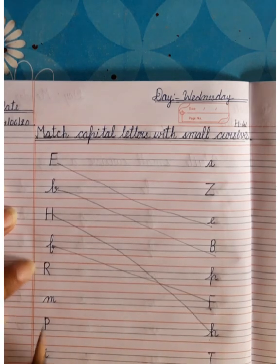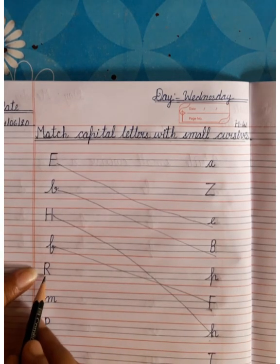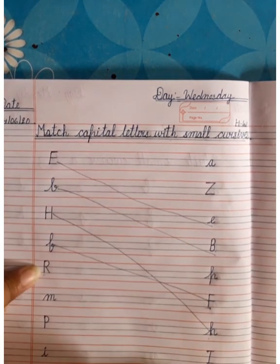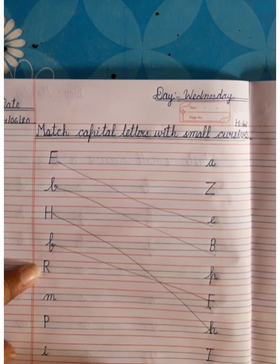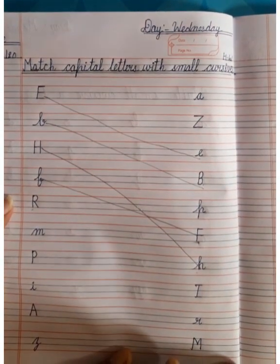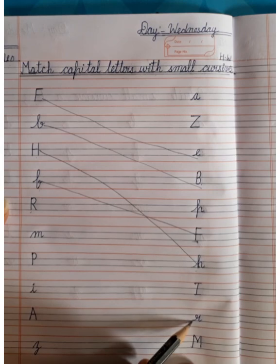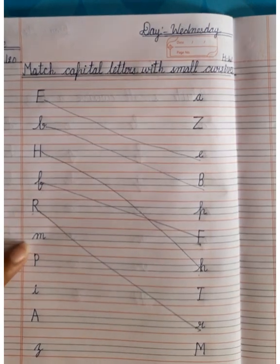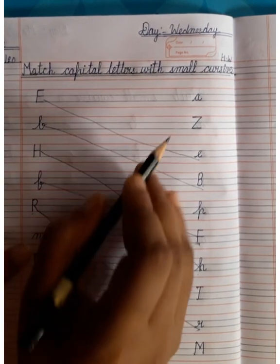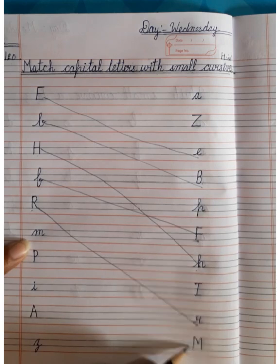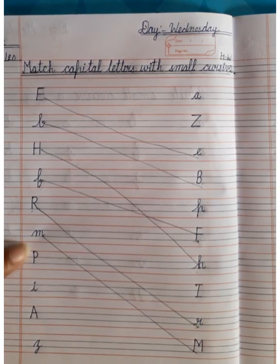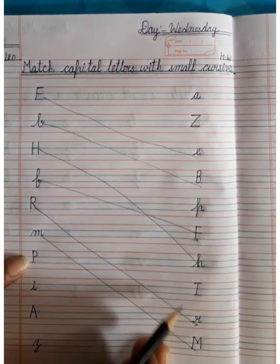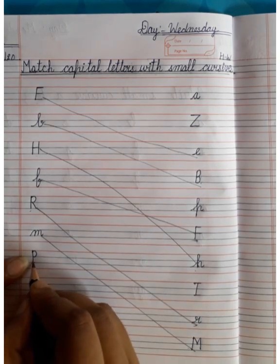Okay, next. M. This side where is capital letter M? Match this. Okay, next. P. Where is P in this side? P. Match this.